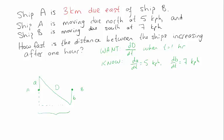This horizontal line is just the east-west distance between A and B, and that's 3 kilometers. And this north-south line is A plus B, right? That's the north-south distance between A and B.